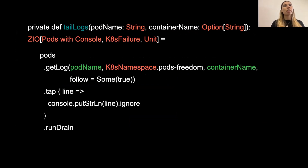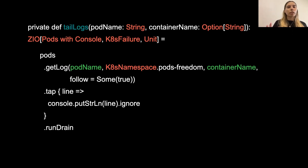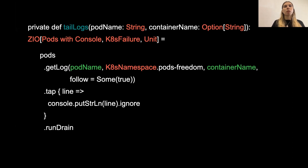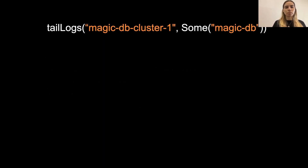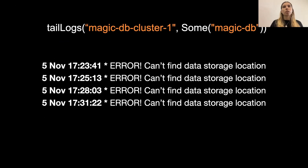What Alice was also eager to find out is what's happening inside the pod, since each pod has a container running — whether a database or a service. She wanted to see the logs. For that she created a method called 'tail logs,' which just needed the pod name, container name, and namespace to follow, and would print everything to the console. Interesting also are the return types: it's a Kubernetes failure type, which is very specific, and the pods with console type that allows printing all results to the console. She called 'tail logs' on pod magicDB-cluster-1 with container name magicDB and found errors — the persistent volume storing the data is not in the same namespace as that pod, so the database wasn't able to find its data storage.